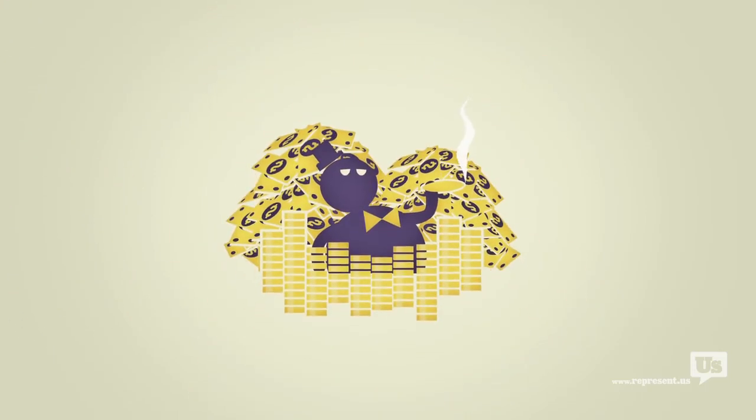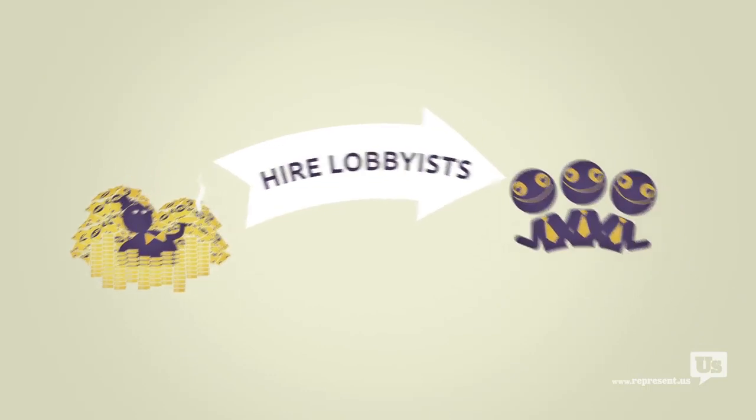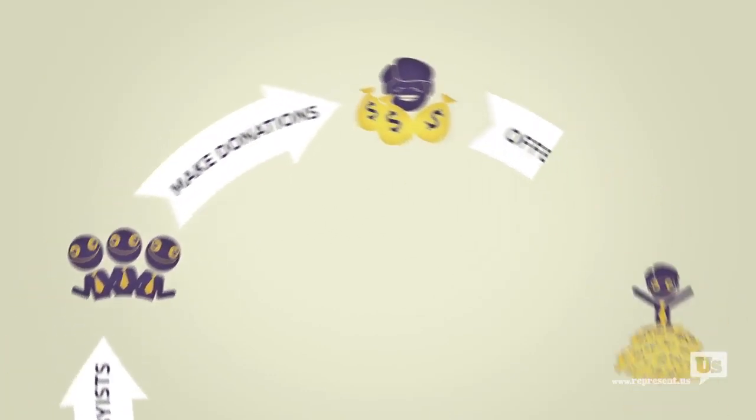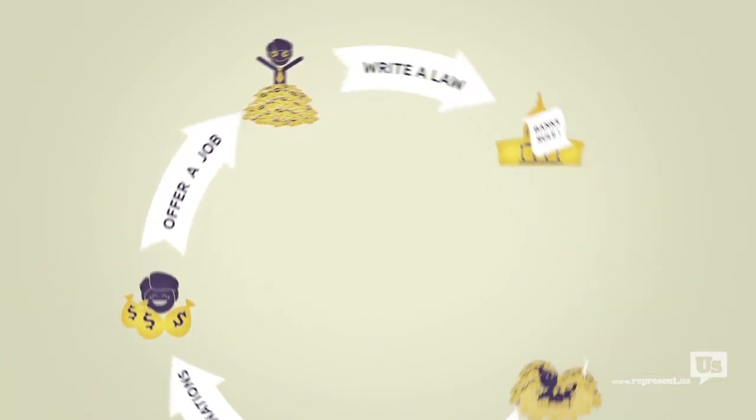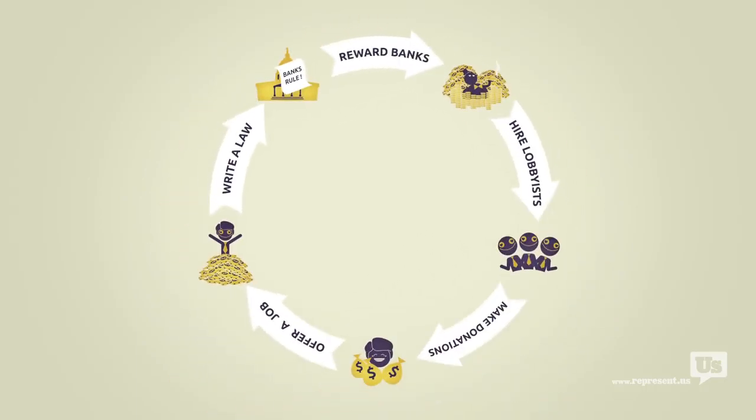This is how a bill becomes a law. A special interest hires some lobbyists. Those lobbyists collect campaign contributions, offer jobs, and then write the laws that Congress then passes to help those same special interests.